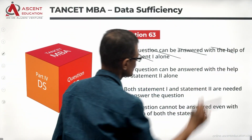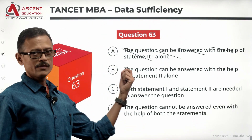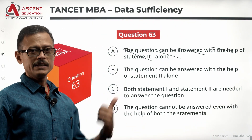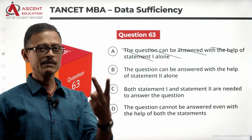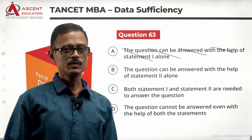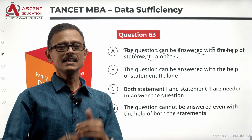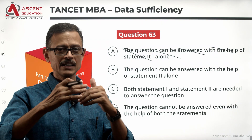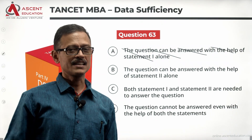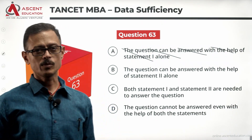We rule out answer option A since Statement 1 is not sufficient. If Statement 2 alone is sufficient, we go with B. If combining both is sufficient, we go with C. Otherwise, if combining them still gives no answer, the answer option is D.